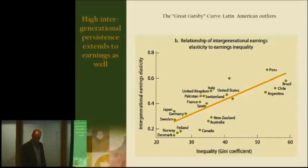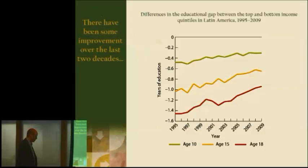So the intergenerational picture that arises for Latin America is not optimistic. I started with evidence of poverty decline and inequality decline, and I'm showing you that in terms of transmission across generations, Latin America is still a very immobile society with a lot of persistence. Not all the news is bleak — there is some evidence of improvement.